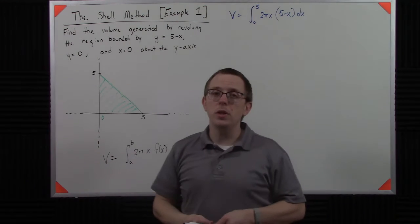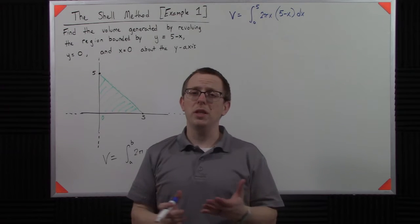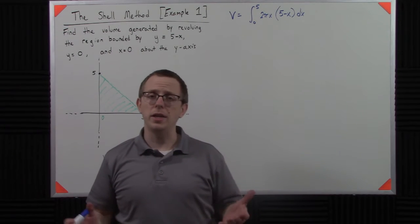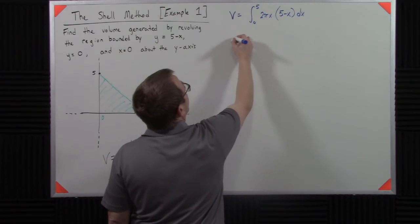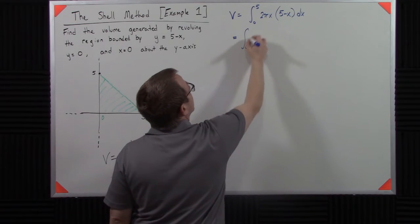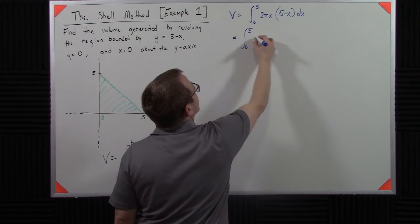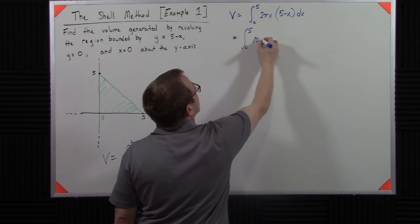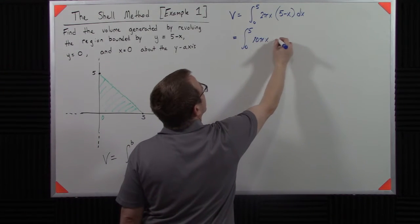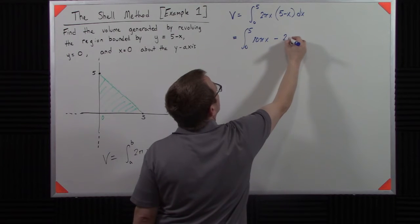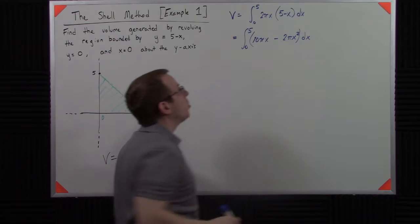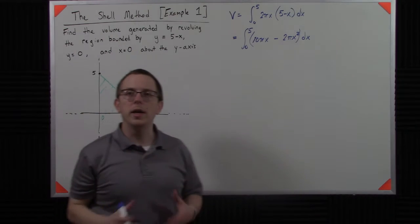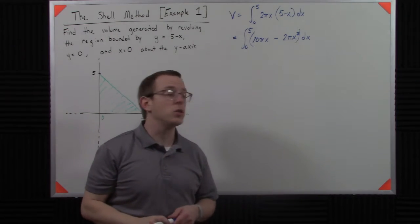So the way we do this is now we have something that's pretty standard from an anti-derivative standpoint. We could pretty easily go through this. So let's do it. We're going to say 5... Right, by multiplying 2 pi x through, I get 10 pi x minus 2 pi x squared.